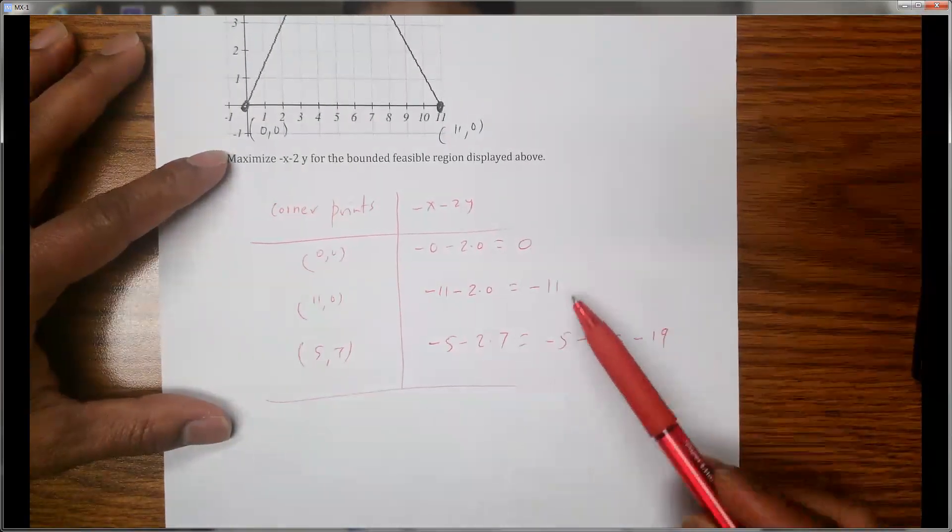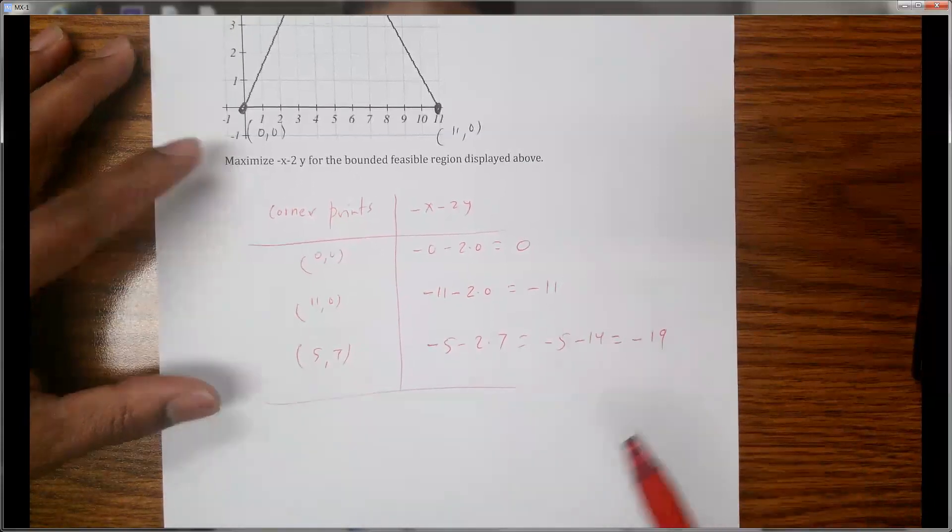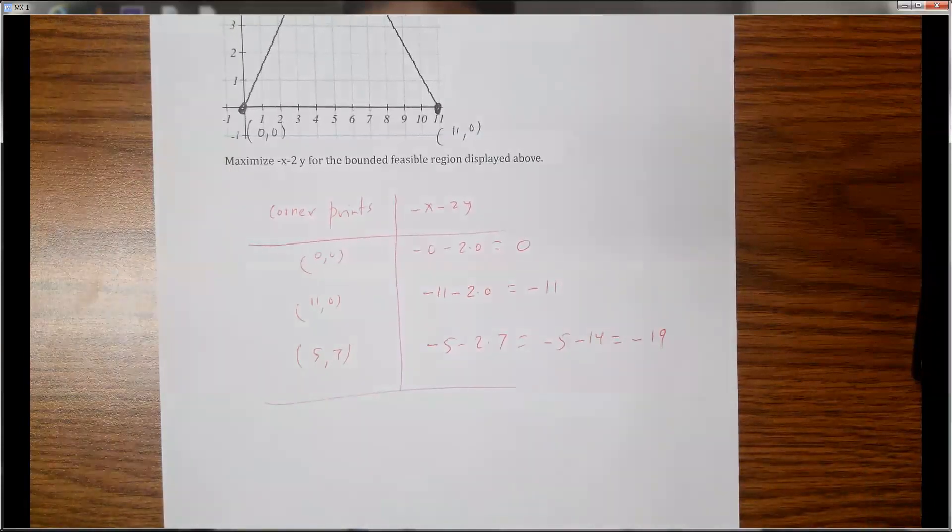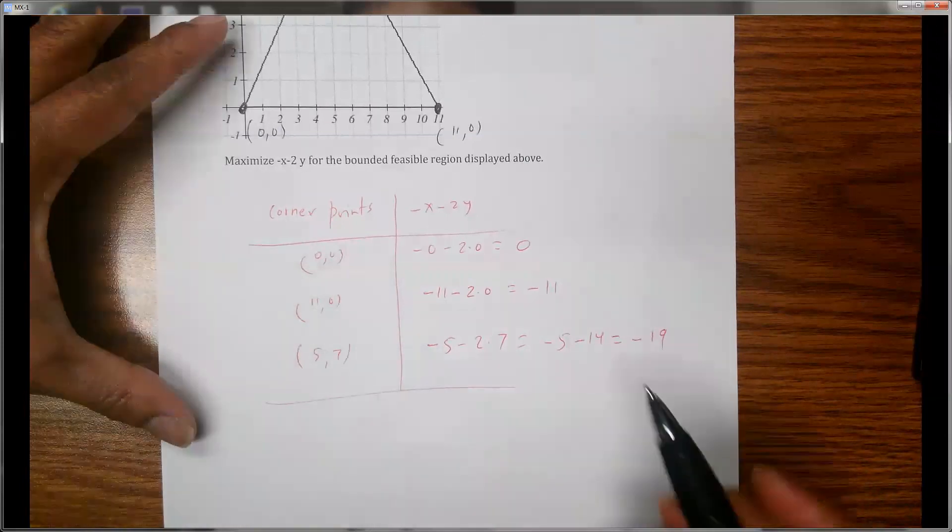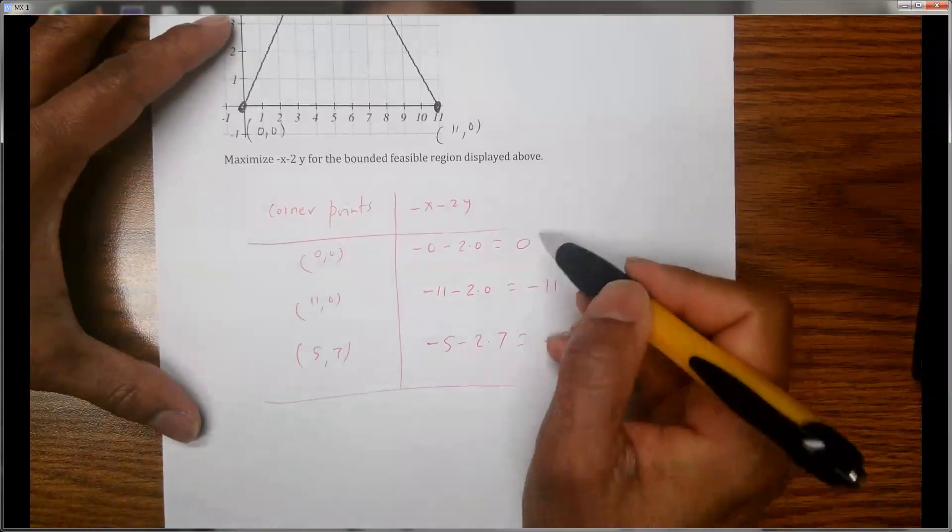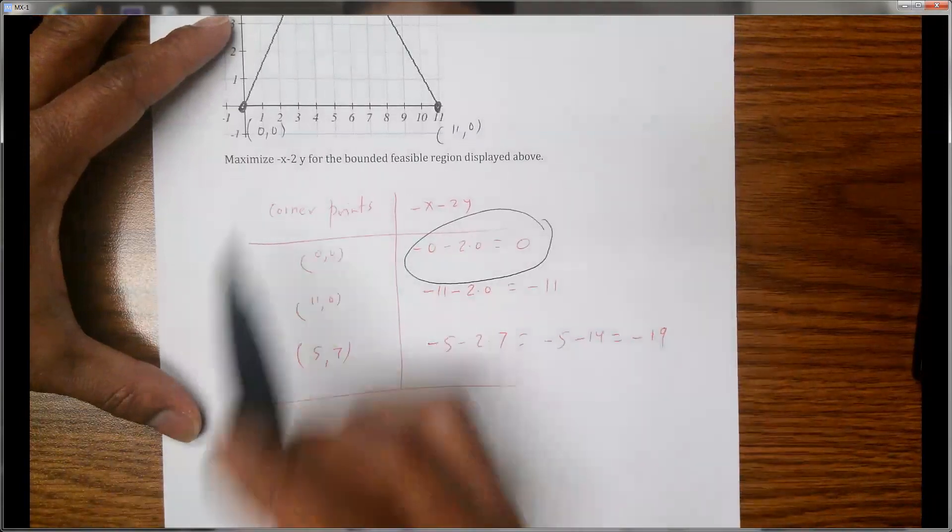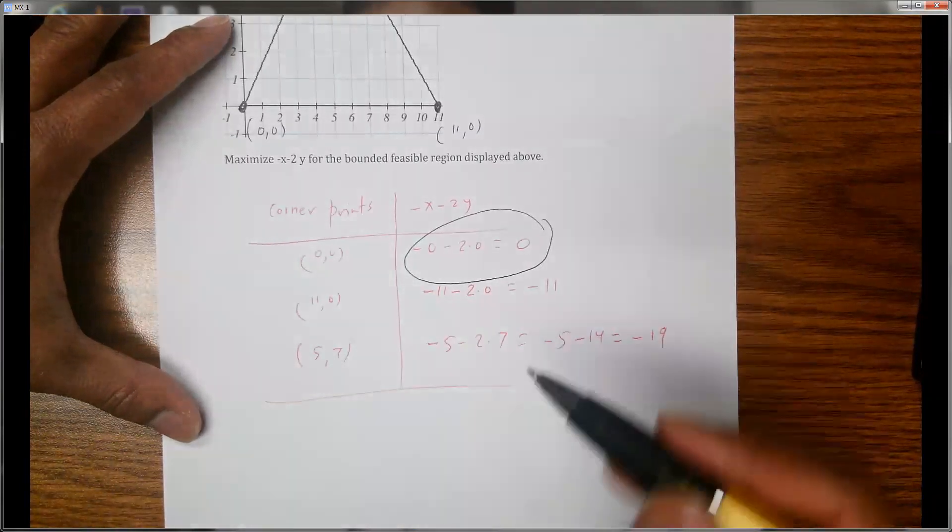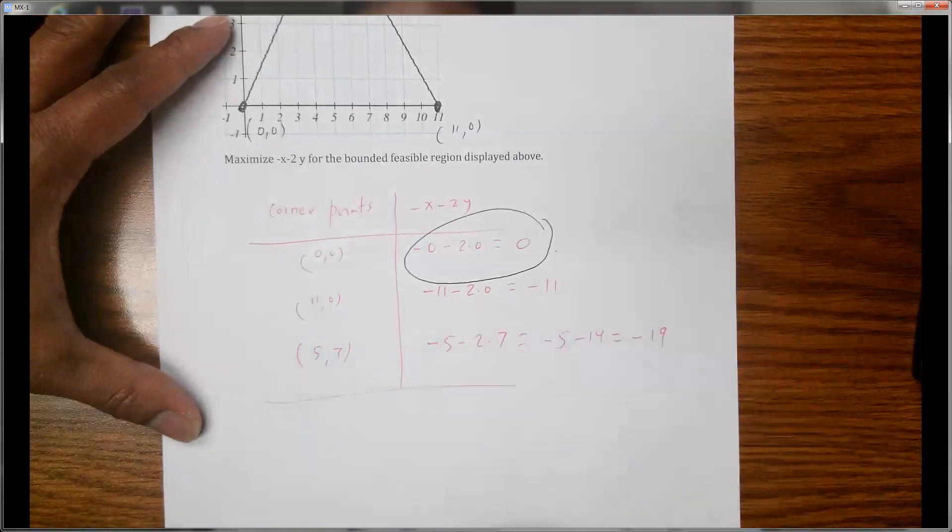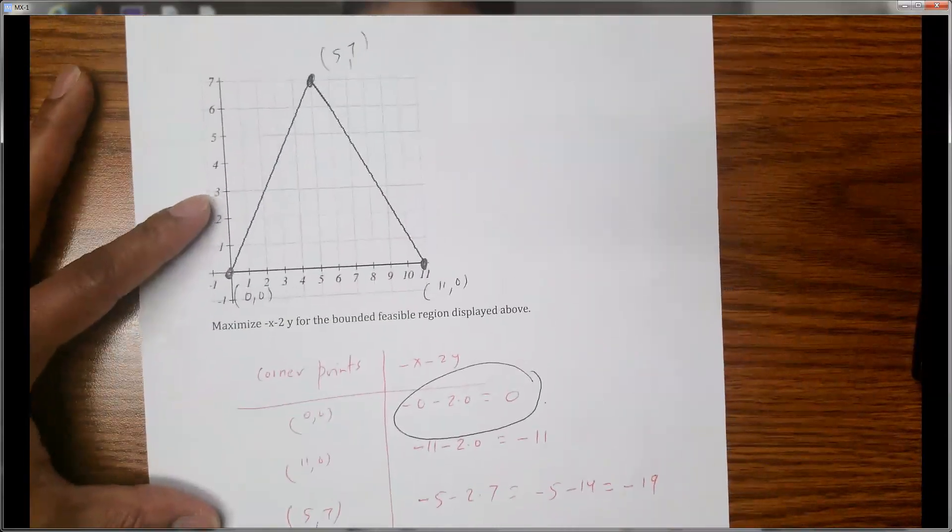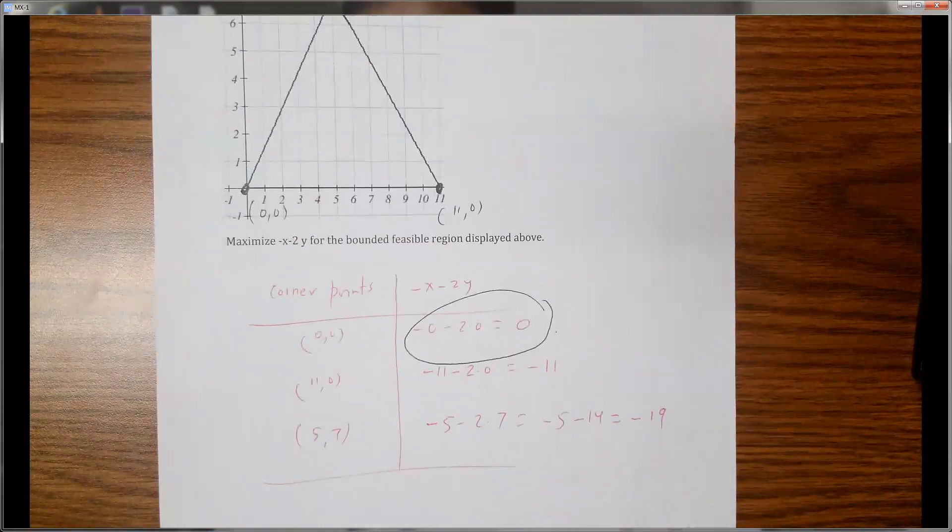We can see, just compare these values: 0, -11, and -19, and find out where this formula is maximum. These are negative numbers, so 0 would be the maximum for this formula. 0 is the maximum, that's the maximum value for this formula.